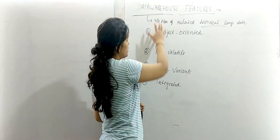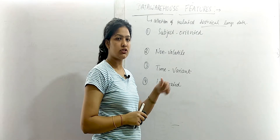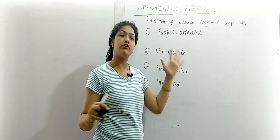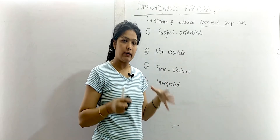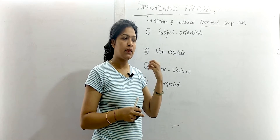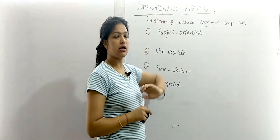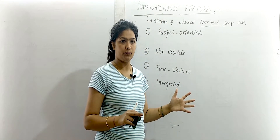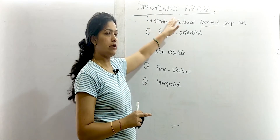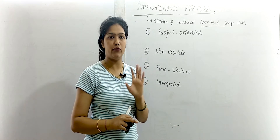In this lecture we will see the data warehouse features. We have studied in an earlier lecture what a data warehouse is — it is simply a collection of historical data, while a database is a collection of current data that we use in day-to-day transactions. There are four main features of the data warehouse, which is the most important topic of this first unit: data warehouse and data mining overview.